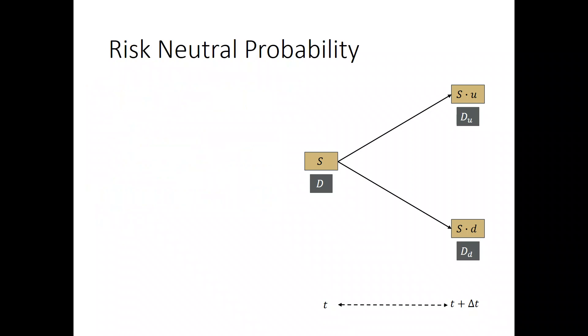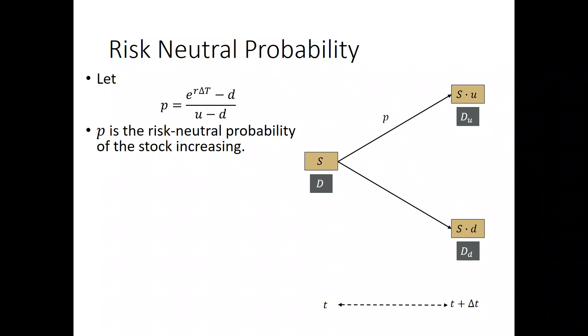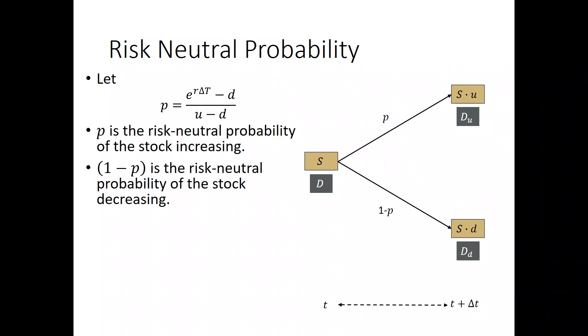We define the risk-neutral probability. As I said, I derived this elsewhere. The risk-neutral probability P is e to the R delta T minus D, all divided by U minus D. We interpret P in the following way: in the risk-neutral world, P is the probability of the stock increasing, and 1 minus P is the risk-neutral probability of the stock decreasing.